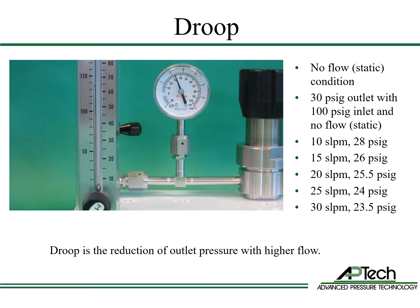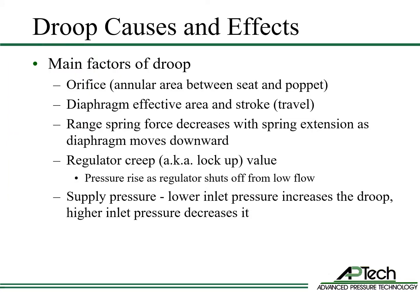This reduction in outlet pressure with higher flow is called droop. Regulator droop is caused by several factors. A larger orifice, diaphragm, and diaphragm stroke reduce droop. The adjustment range spring's force decreases with spring extension as the diaphragm moves downward, which increases droop. When a regulator transitions from low flow to no flow, the regulator creeps or locks up, and the outlet pressure increases slightly above set point, increasing droop. Finally, higher supply pressures decrease droop, and lower supply pressures increase droop, as we will demonstrate in the next slide.